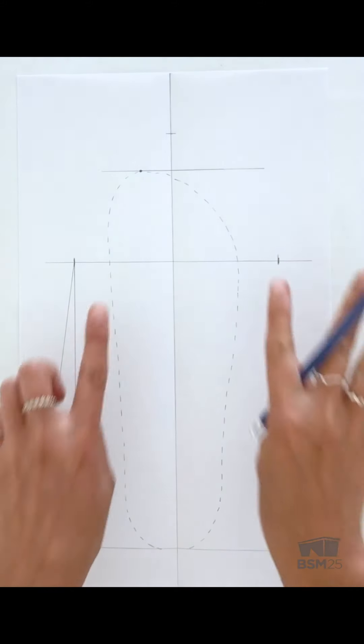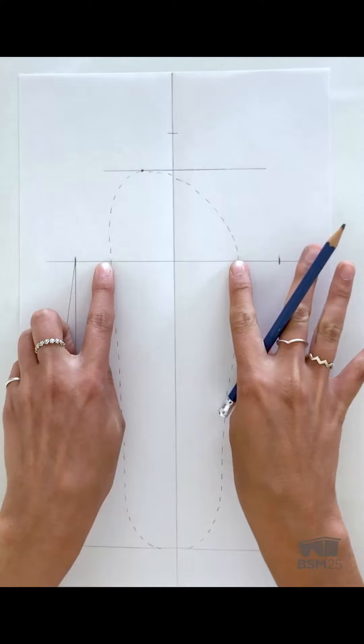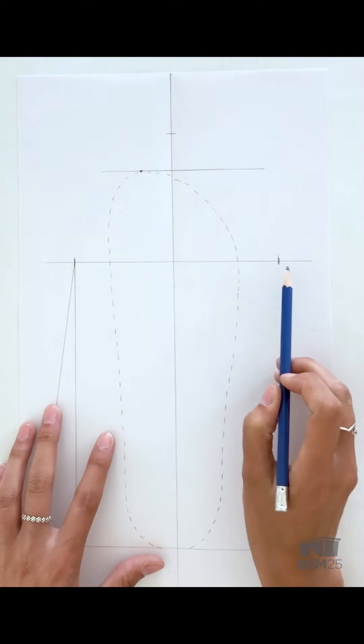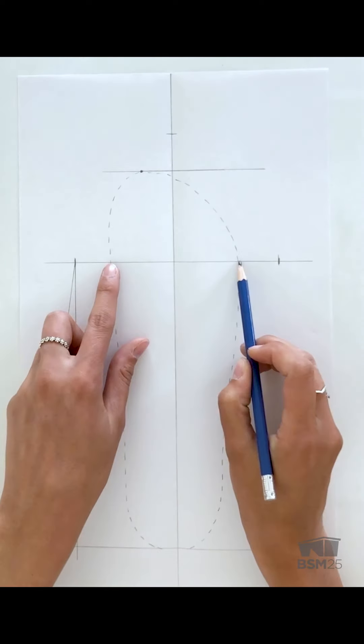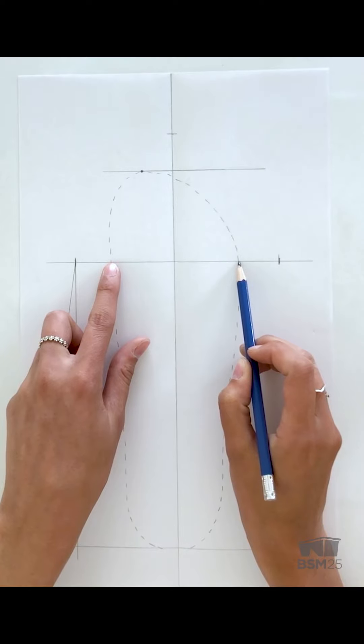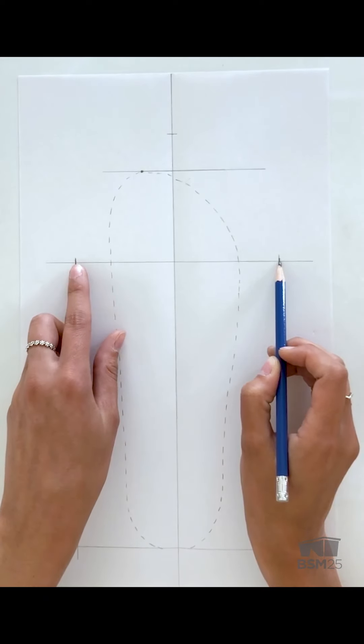Our second guideline is at the widest part of our foot. We're going to draw another horizontal guideline. From the dashed line on either side, measure out 1 inch and mark a little tick mark.